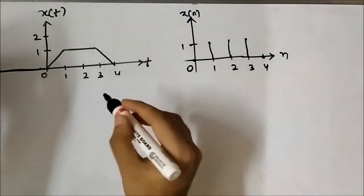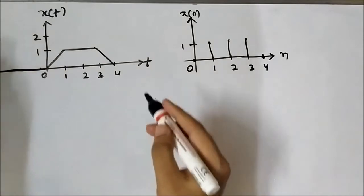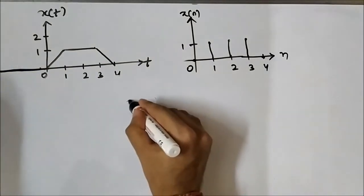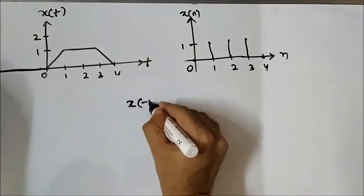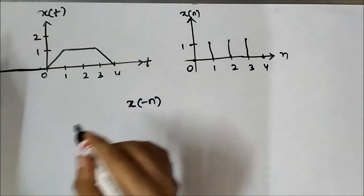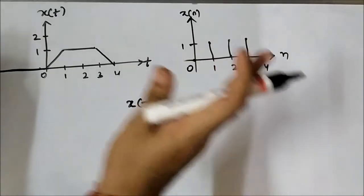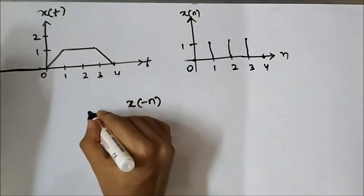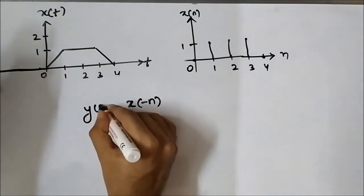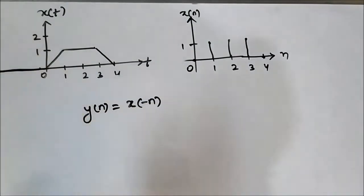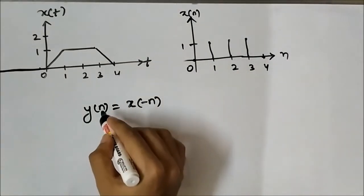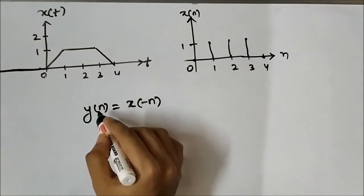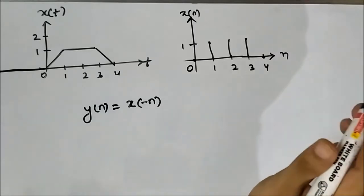If we want to perform the time reversal operation, it will be y[n] = x[-n]. For that, we will use the same approach — we will create a signal y[n] and equate it with x[-n]. Now we have to determine the values of y[n] at different values of n.